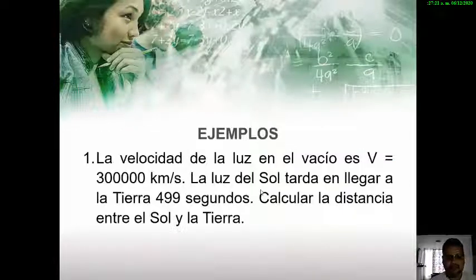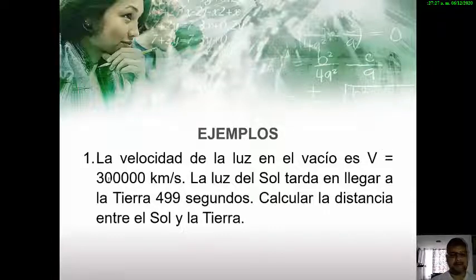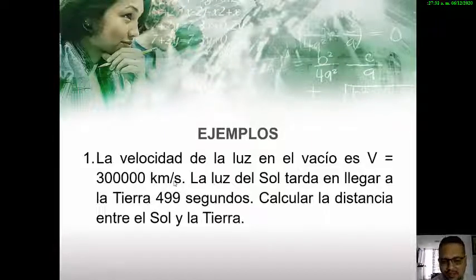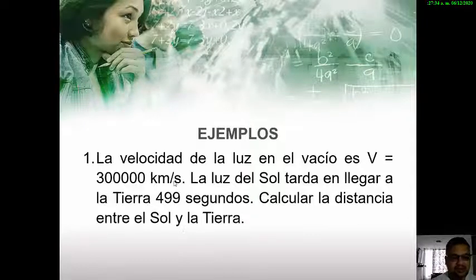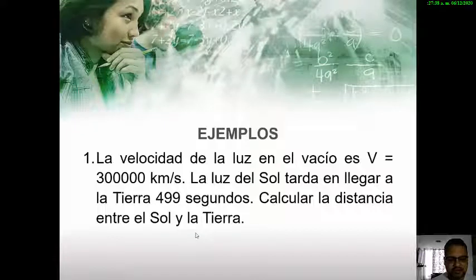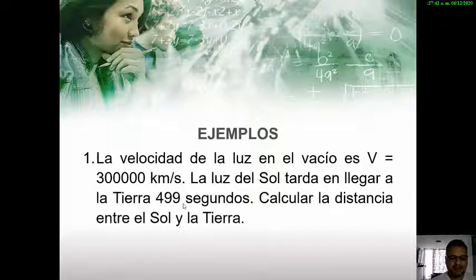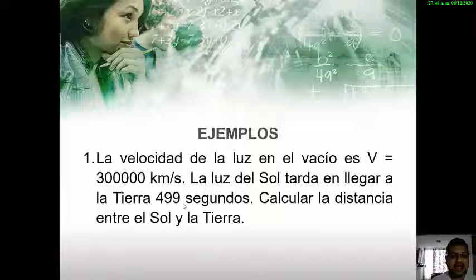Vamos con un primer ejemplo. La velocidad de la luz en el vacío es 300.000 kilómetros por segundo. La luz del sol tarda en llegar a la tierra 499 segundos. Se nos pide calcular la distancia entre el sol y la tierra. Para resolver este ejercicio, los invito a observar el siguiente video.